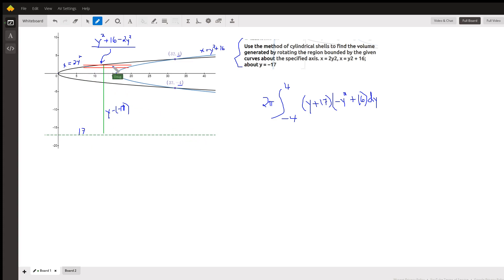So our typical shell is horizontal, parallel to the axis of revolution. And we want to multiply the average radius. Well, the average radius is the distance from the axis of revolution to the center of a typical shell. And since this little distance here is y, the total distance is y minus a negative 17, or y plus 17. That's what this is right here, an algebraic expression for the average radius.